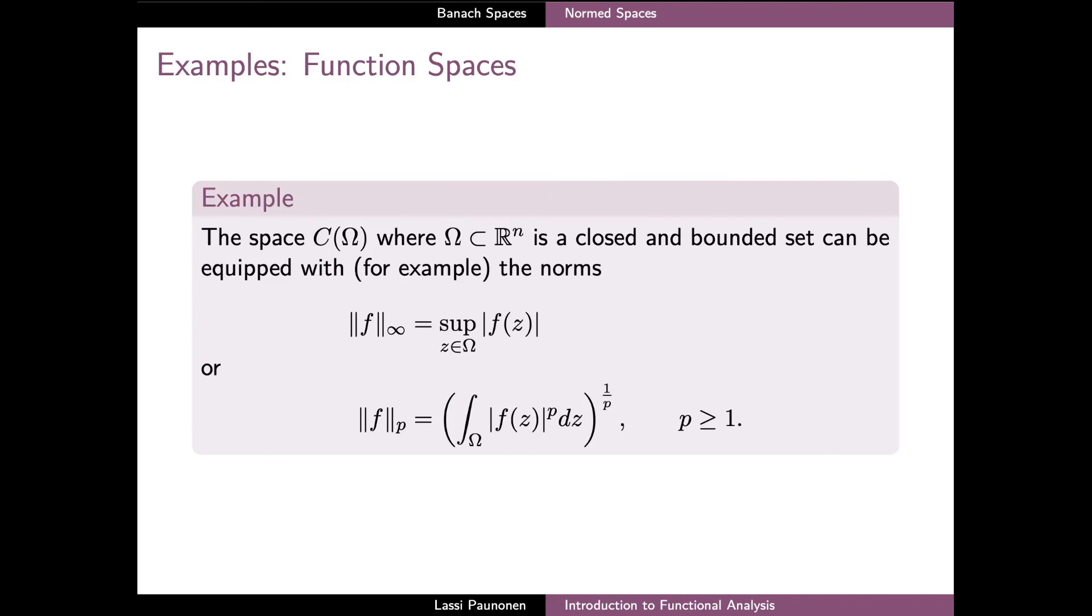And finally, the previous example has a natural generalization to the spaces of functions of several variables when we consider the space of functions which are continuous on a closed and bounded subset Ω of R^n. Again, these functions are uniformly continuous and the norms defined here have well-defined values for all functions on this space. And as before, the first two axioms are quite straightforward to check and the triangle inequality for the p-norm follows from a more general version of the Minkowski inequality.